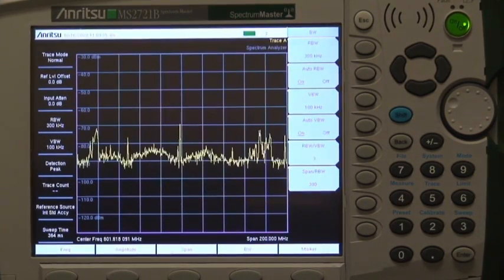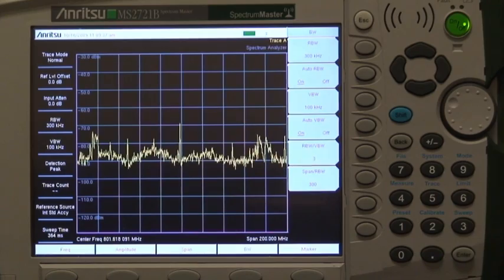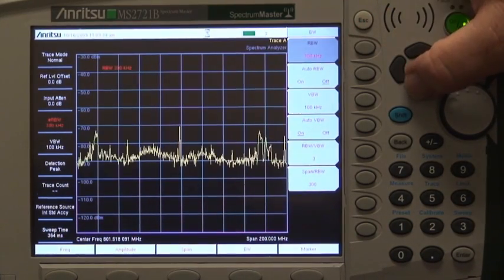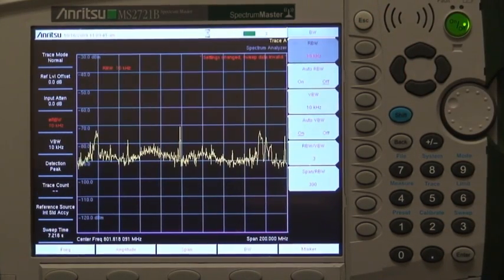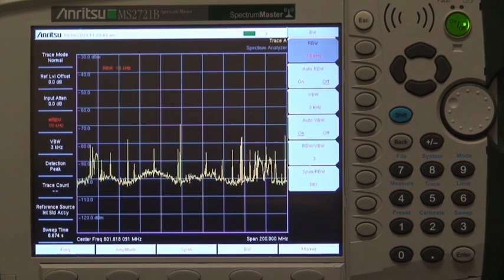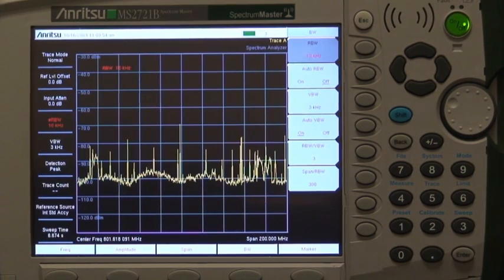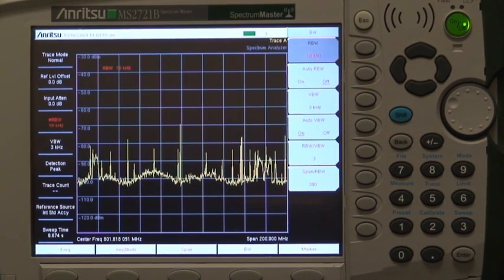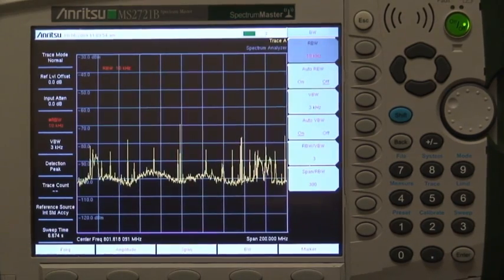You can use a wide RBW to get fast measurements at the expense of higher received noise and reduced frequency resolution, or you can use a narrower RBW with slower sweeps to reduce noise, get better frequency resolution and increased sensitivity. Because you have the freedom to set the resolution bandwidth from 3 MHz all the way down to 1 Hz, you can make the trade-off that makes sense for your measurement.